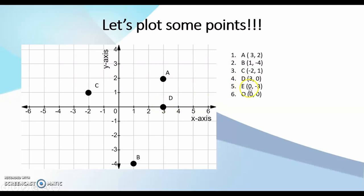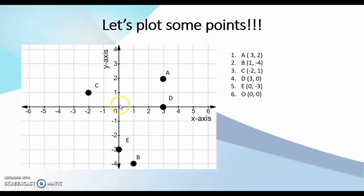My point E is at (0, -3), which means I start at my origin and I don't move either left or right. However, I move downwards three units, so my point E actually lies here. O is the point (0, 0), which means I start at my origin and I neither move left nor right, nor up or down. So my point O is actually right at that intersection.